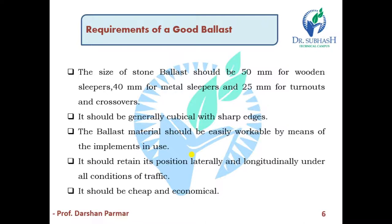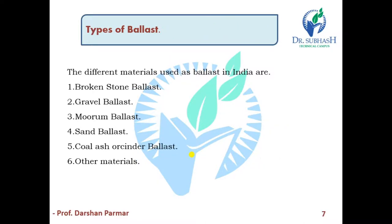The next point is it should be cheap and economical. Now the types of ballast. Different materials used as ballast in India are: first, broken stone ballast; second, gravel ballast; third, murum ballast; fourth, sand ballast; fifth, coal ash or cinder ballast; and sixth, other materials.